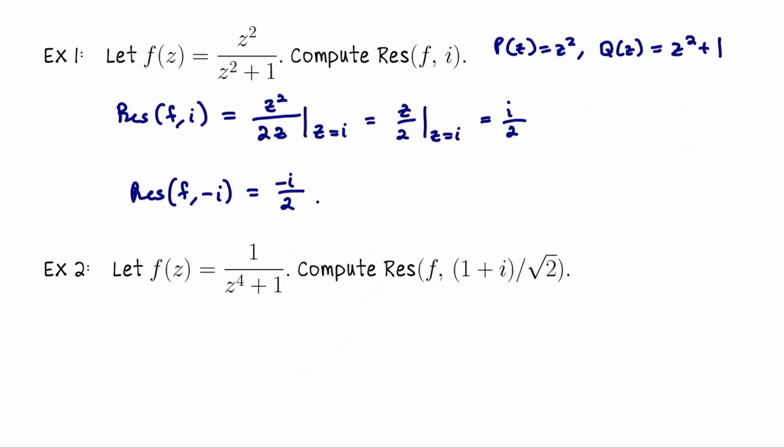Jumping down to the second example, in this situation, f of z is 1 over z to the 4th plus 1. That denominator factors into four distinct roots. Let's compute the residue of f at one of them, which is 1 plus i all over the square root of 2. So again, using our result, we can say that the residue of f at 1 plus i all over the square root of 2.